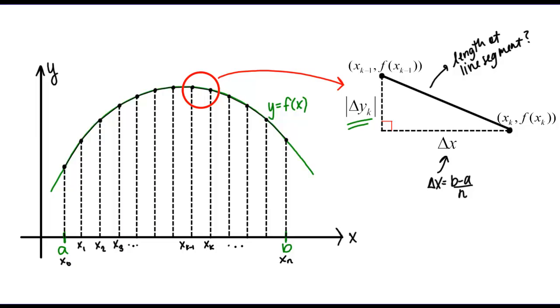Then I can use the Pythagorean theorem to find the hypotenuse of the triangle, which is the length of this line segment. Pythagorean theorem says that the length of the hypotenuse should be the square root of delta x squared plus delta y sub k quantity squared. I dropped the absolute value signs on delta y sub k here since squaring something makes it positive anyway.